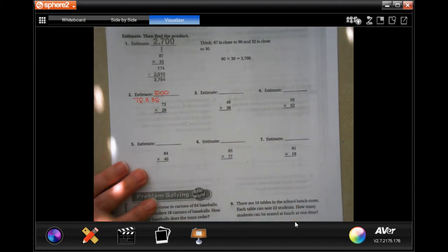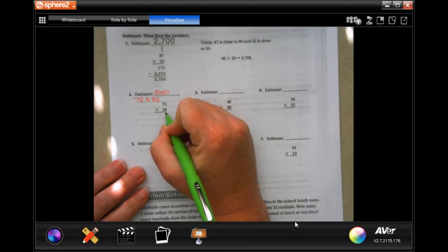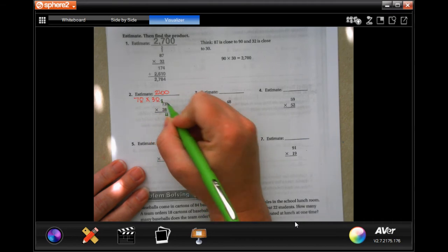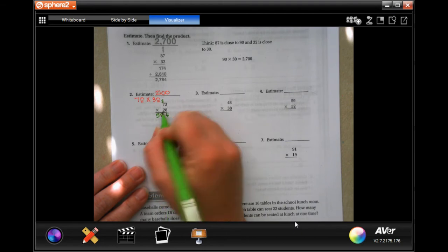Now the math is going to be pretty easy too. 8 times 3 is going to be 24, 4 down, carry our 2. 8 times 7 is 56, plus 2 more, 58.